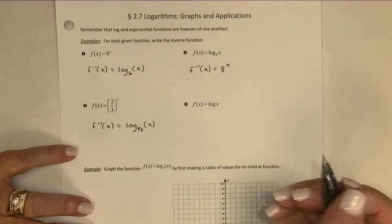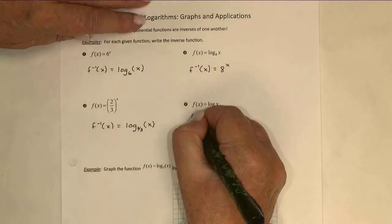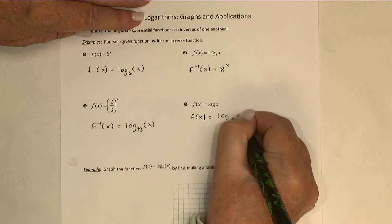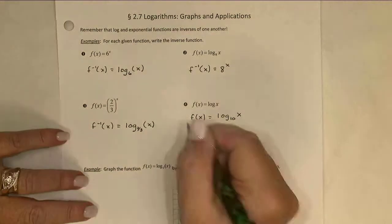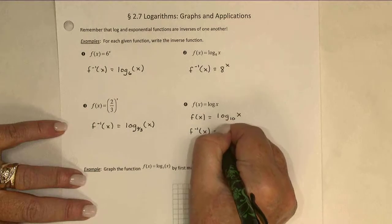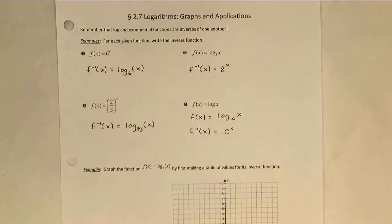In the last example, f of x equals the log base x. Remember, that really means the common logarithm, or the logarithm base 10 of x. The inverse of the logarithm is the exponential with the same base, so 10 to the x power. So typically, I don't really do any algebraic work exactly to find inverses of logs and exponentials. I just know that they are inverses of one another, and I write them down.